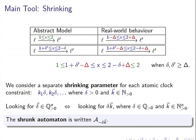We consider a separate shrinking parameter for each atomic clock constraint, so delta and delta prime can be different. We look for parameters of the form: one rational delta times integers k1, k2, k3, etc. This is equivalent to any set of rational numbers, since any set of rationals can be written as delta times positive integers. Given such a vector (delta, k), we get a shrunk automaton where each guard has been shrunk by the corresponding value.